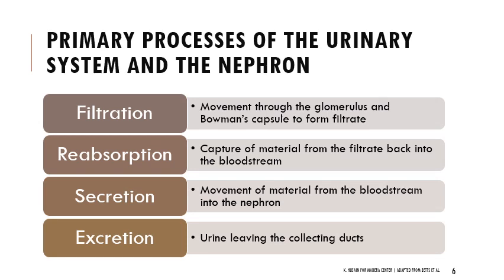Before we get much further, here are the primary processes involved in the urinary system and throughout the nephron. Filtration is specifically the movement of substances through the glomerulus — that bundle of capillaries at the start of the nephron — and through Bowman's capsule to form filtrate. It's the formation of filtrate from blood plasma. It's really important: we're filtering blood plasma, but formed elements like blood cells and platelets should not come through. If they do, that can be really bad.